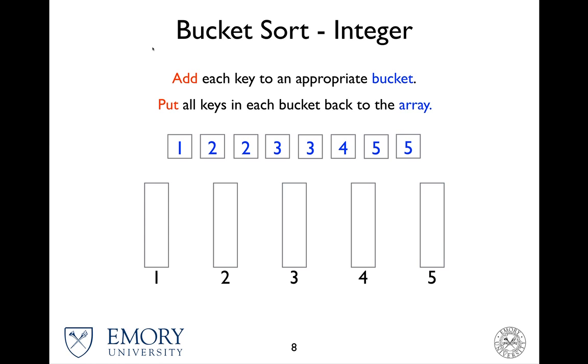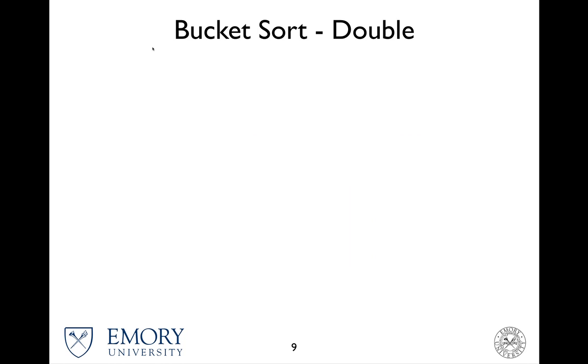Once we have cleared out all the buckets, we have a list with all the values in ascending order. This is easy, this is how it can be done for integer values only. But what about doubles? Let's see.